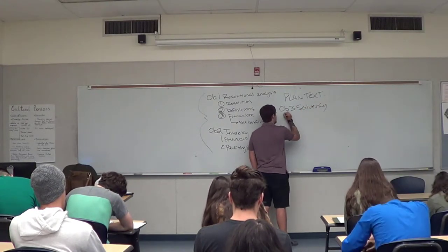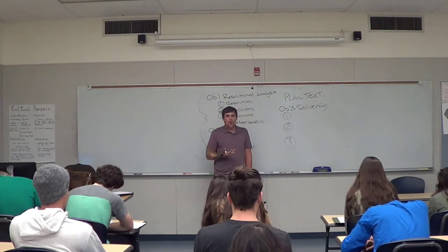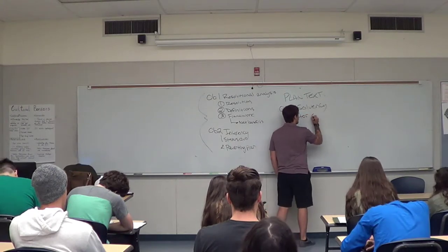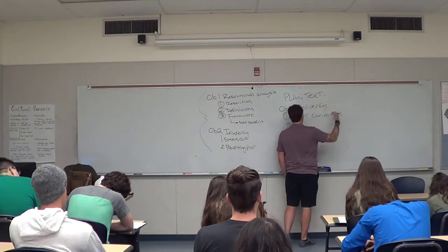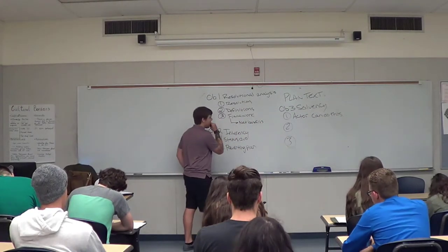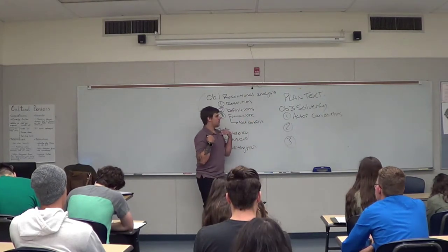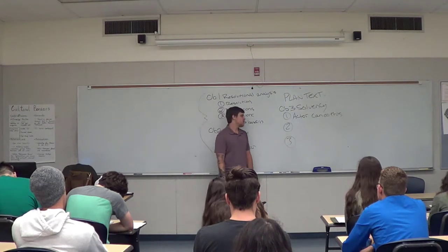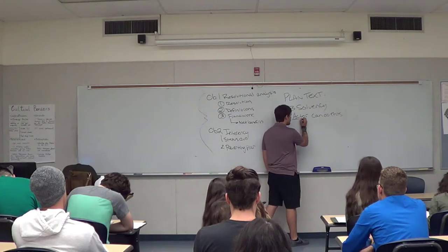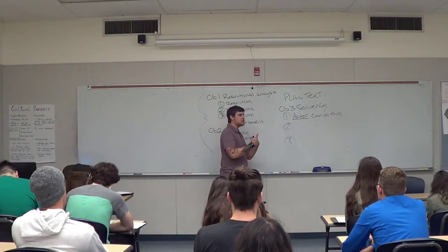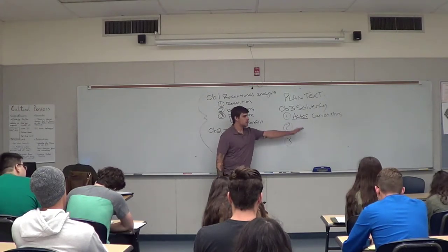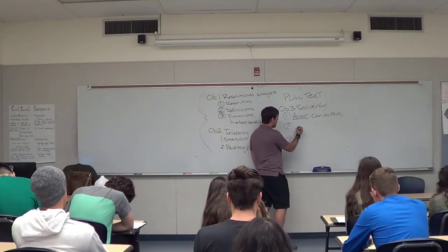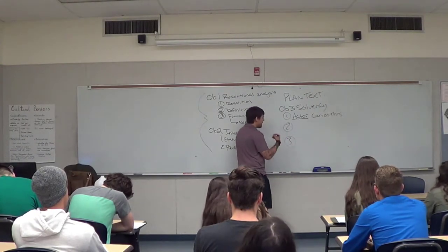Observation 3 is the independent solvency sheet. Some typical arguments you would read here include: the actor can do this, or they're the only ones to do this — the actor being the organization or person in the plan text who enacts the policy. In this case it would be the United States federal government, it could be the United Nations, the European Union, or a number of actors. The first argument demonstrates just the functionality of the plan text — the actor can pass this because they can pass federal legislation and divvy out subsidies, giving them justification to do so.